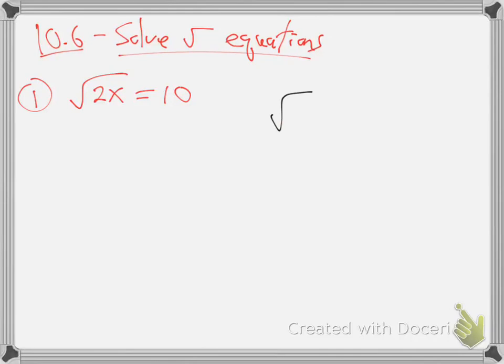Like the square root of four ninths — simplify it, we go okay, that's two-thirds. That's a simple one, but my point is there wasn't an equal sign. There wasn't a left side, right side, find the value of x that makes it true. That's what we're doing here — that's what's new tonight. You've got an equal sign; you want to find out what value of x you could put in there to make that thing true.